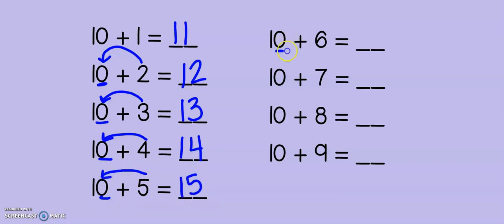If we know our 10 plus and then a number, then this strategy will help us add quickly and easily. All I'm doing is replacing the 0 with our new number in the 1's place. So, it's very quick and very easy to add. That is why a lot of students use the make-a-ten strategy because adding on to 10 is very easy.